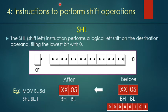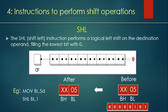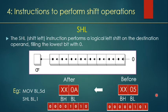The SHL (shift left) instruction performs a logical left shift on the destination operand, filling the lowest bit with zeros. Each bit transfers its data to the next bit on the left, and the MSB transfers to the carry flag. For example, MOV BL, 5h copies value 5 to BL. Then SHL BL, 1 shifts the data by 1 bit, and the value becomes 0Ah.